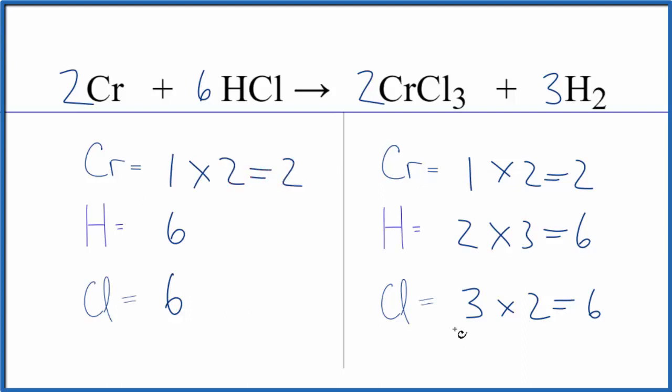Now everything's balanced. So the key here was when we had that odd number, we doubled that to six. We took it from three to six. When that gave us the even number, it made it a lot easier to balance.